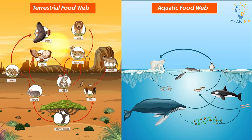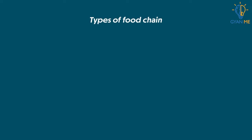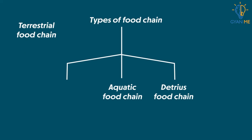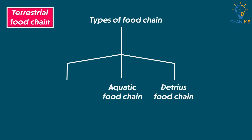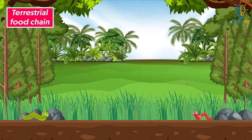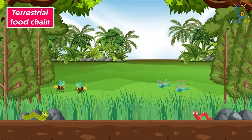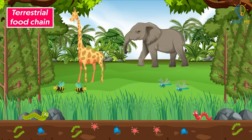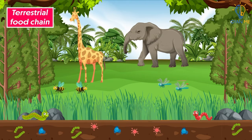We will understand the food web in the later half of the video. But let us first understand different types of food chain one by one, starting with the terrestrial food chain. The terrestrial food chain links organisms that live on land — from the tiniest microbes in the soil to the large mammals of forests — forming various trophic levels.